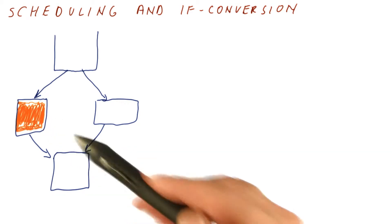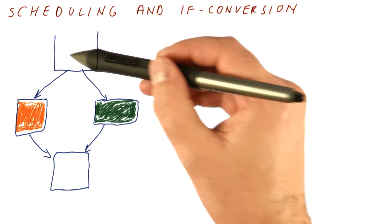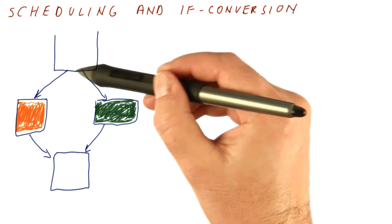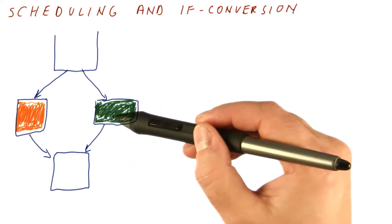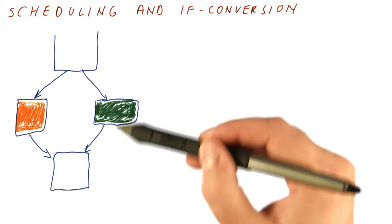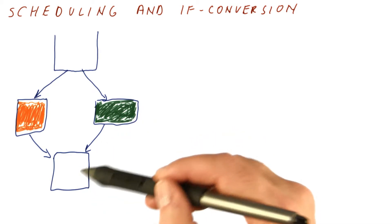Let's say this is the orange code, and let's say that this is the green code. Before if-conversion, we can easily reschedule code within here. We can also move things around within this. We can move things around within this, and we can move things around within this. But it's hard to mix the code from these together.